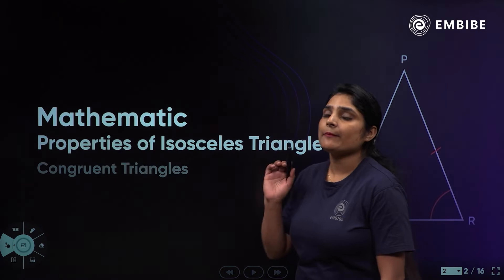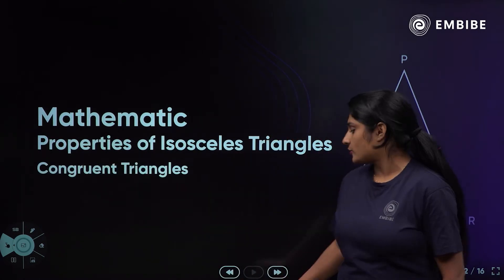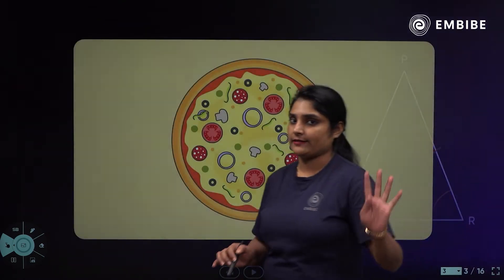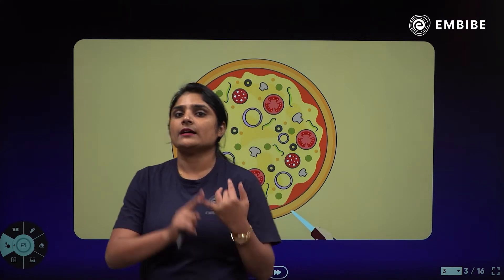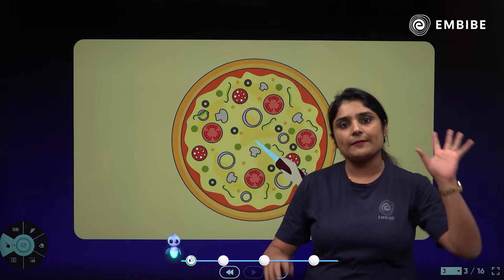In the last lesson, we studied 5 criteria: SAS, SSS, ASA, AAS, and RHS. I explained all 5 criteria.